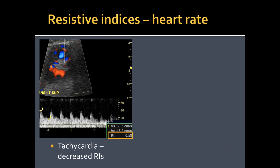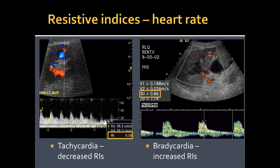Another consideration: resistive indices are heart-rate dependent. With a fast heart rate, there's less time for diastolic velocity to decline, producing a relatively higher end-diastolic velocity and an artifactually lower RI. With bradycardia, there's more time for end-diastolic velocity to decline, producing artifactually elevated RIs. There is no quantitative correction, so be aware that moderately increased RIs in a very bradycardic patient may simply reflect heart rate artifact rather than true kidney pathology.